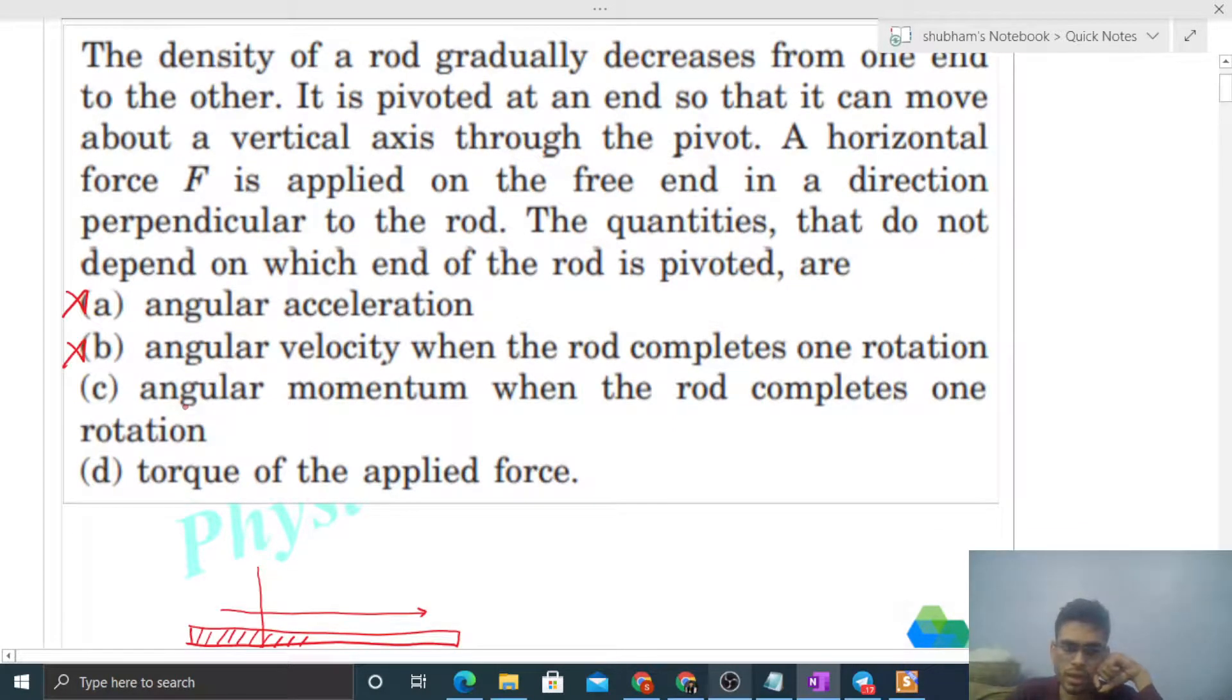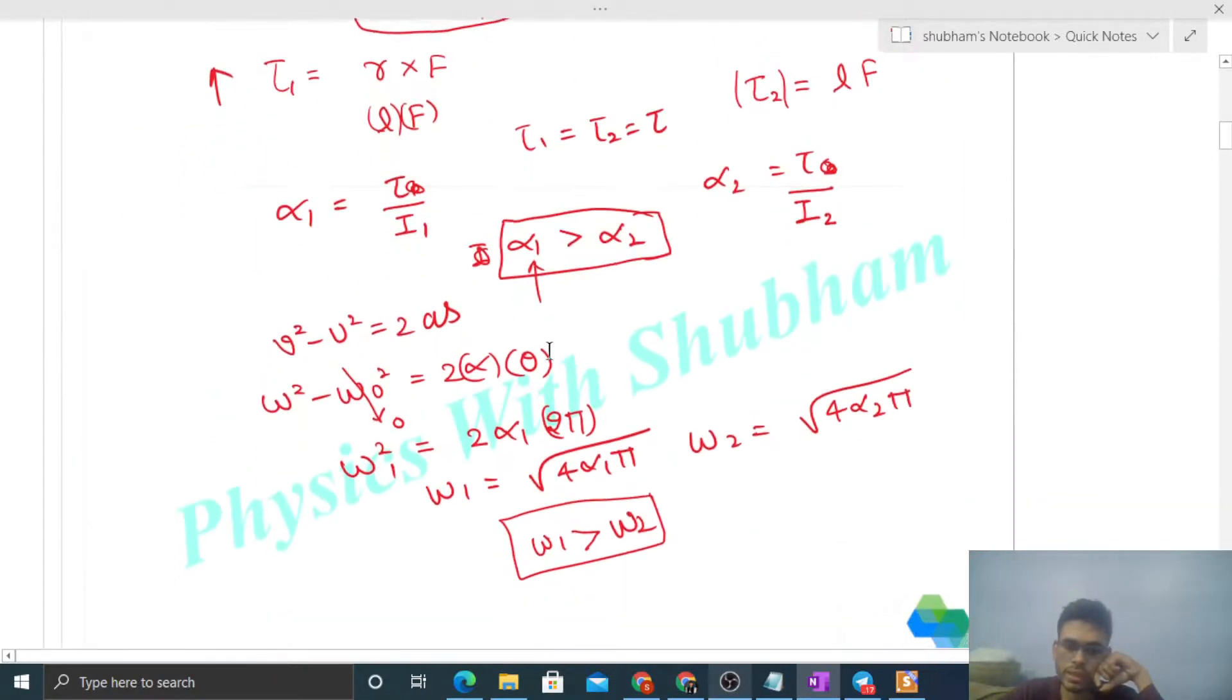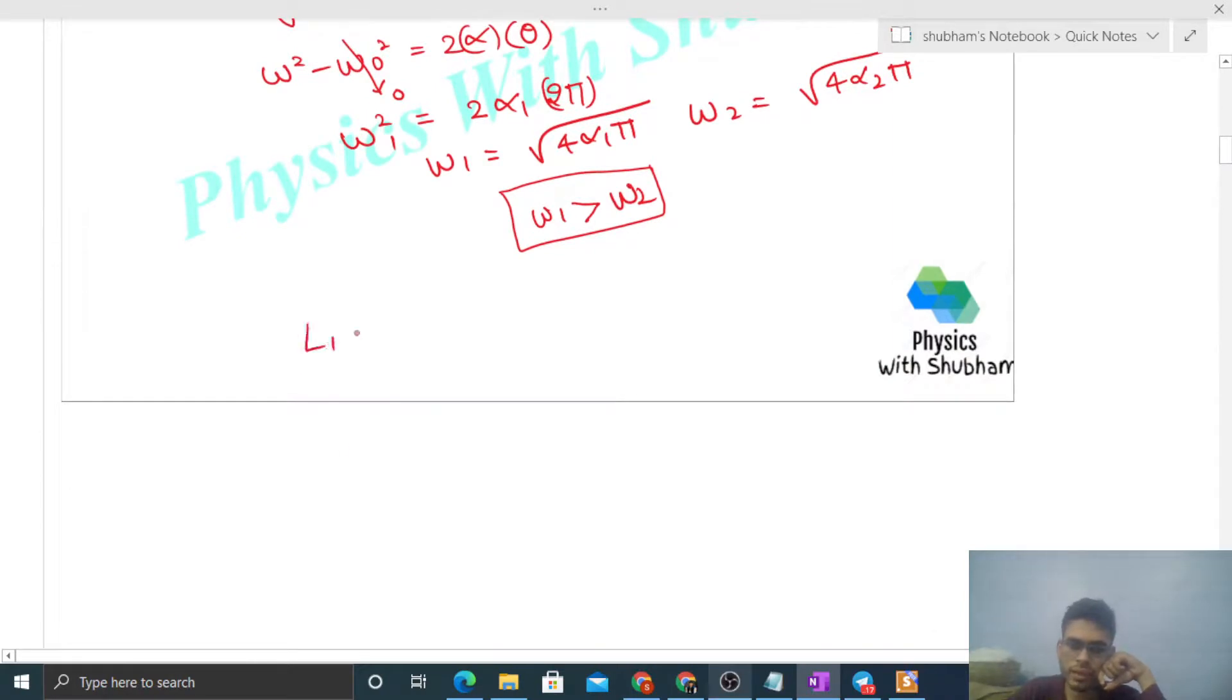Angular momentum when the rod completes one rotation - L1 equals I1 times ω1, and L2 equals I2 times ω2. I and omega are both different, but we need to check their product. It's possible their product could be the same or constant. Let's see: L1 equals I1 times omega one, which is square root of 4α1π.